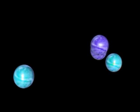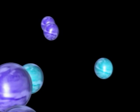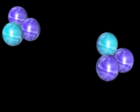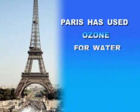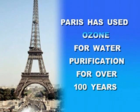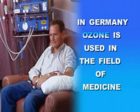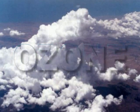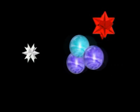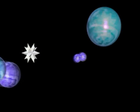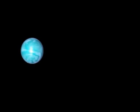So if ozone is such a marvelous natural purifier, why don't we just manufacture it and use it instead of relying on potentially dangerous chemicals? The answer is that it has been done for many years. The water in Paris has been purified using ozone for more than a hundred years, and over a thousand major cities in the world use ozone in their municipal water treatment plants. In Germany, ozone has been effectively used in the medical field since the early 1940s, including for the treatment of blood. The problem with ozone is that it has an extremely short lifespan — it seeks out other molecules to oxidize, so we need to continuously generate and release ozone where it's needed.